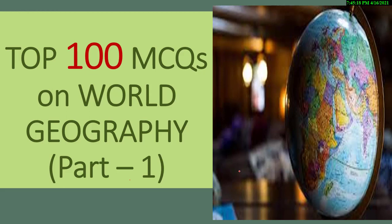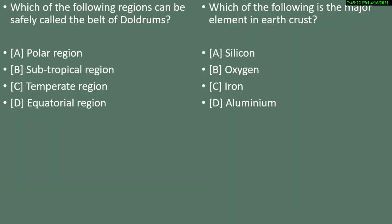Without any delay, let's start. First question: which of the following regions can be safely called the belt of doldrums? Options are: polar region, subtropical region, temperate region, or equatorial region. The correct answer is equatorial region.